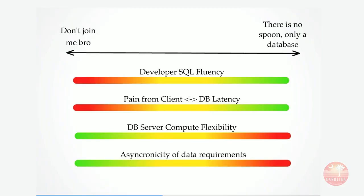To help you decide where to fall on that spectrum, there are really five factors to consider. First, developer SQL fluency — if only one person on your team can understand and fix a critical stored procedure when it breaks, that's a single point of failure. Second, if you have slow network latency between your backend and database, stored procedures let you get more done per call. Third, how you're hosting it — if you're inflexible in scaling up under heavy load, doing a lot of work on the database is probably a bad idea. Finally, do you really need the speed of database operations, or can it be handled asynchronously on the backend?